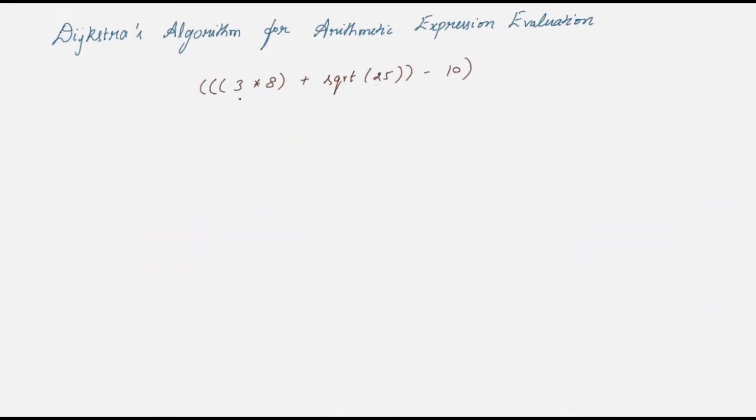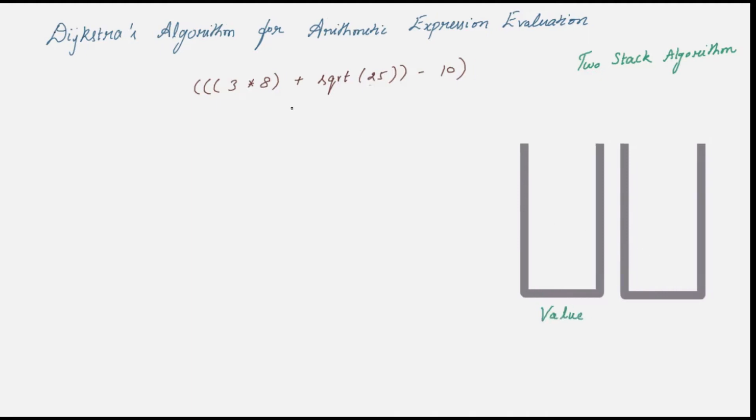Stacks can be used to evaluate an arithmetic expression like this. A very famous algorithm was given by Dijkstra. It is known as two stack algorithm. One of the stacks is used to store the numerical values like 3, 8, or 25. Let's call that the value stack. The other one is used to store the operators like multiplication, square root, or subtraction. Let's call that the operator stack.